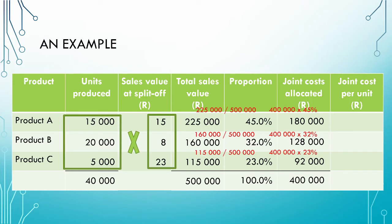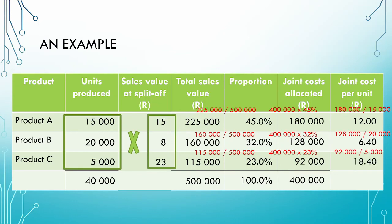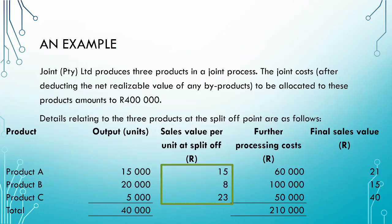To calculate the joint cost per unit, we take the allocated joint cost and divide it by the number of units produced. For product A, 180,000 Rand divided by 15,000 units gives 12 Rand per unit. For product B and product C, we get 6 Rand 40 cents and 18 Rand 40 cents respectively. You should notice a difference compared to the physical measures method used in our previous video. Unlike that method, the joint cost per unit here is lower than the sales value at the split-of-point, so we don't have the problem of writing down our inventory to the net realizable value.